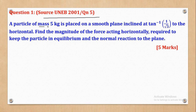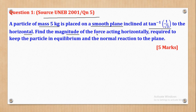A particle of mass 5 kilograms is placed on a smooth plane — note that word 'smooth plane' — inclined at arctan of 1 over root 3 to the horizontal. Find the magnitude of the force acting horizontally — note that word 'horizontally' — required to keep the particle in equilibrium and the normal reaction to the plane.